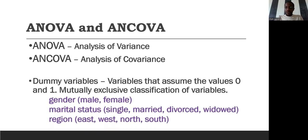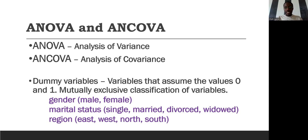Typical examples of dummy variables include gender, where we have male and female; marital status, where we have single, married, divorced, and widowed; and region, with east, west, north, and south. Dummy variables are categorical variables; however, we make these categorical variables assume the values of just zero and one. When that happens, they are classified as dummy variables.